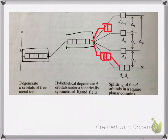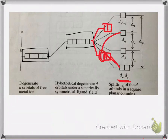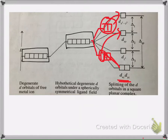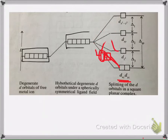Out of the three t2g orbitals, dxz and dyz go down as they have no appreciable repulsion from the ligands. Meanwhile, dxy energy increases because the other four ligands approach more closely. In the eg level, dx²y² experiences greater repulsion from the four ligands coming through x and y axes, so its energy increases. But dz² has no appreciable repulsion since there is no ligand on the z-axis, so it comes down. This is the splitting pattern seen in square planar complexes.